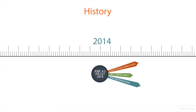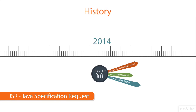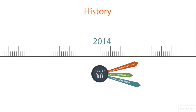JDBC 4.2 is included in Java Standard Edition 8. JSR stands for Java Specification Request, which is basically a part of the Java Community Process whereby interested parties can put forward their ideas for enhancement.